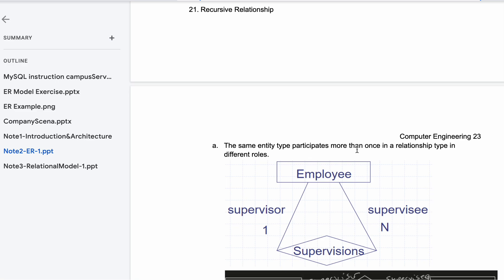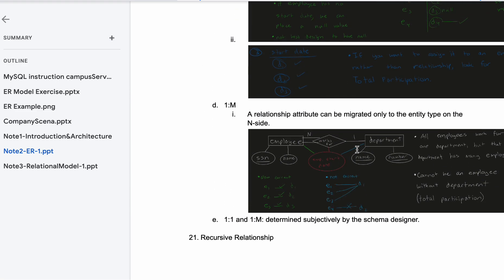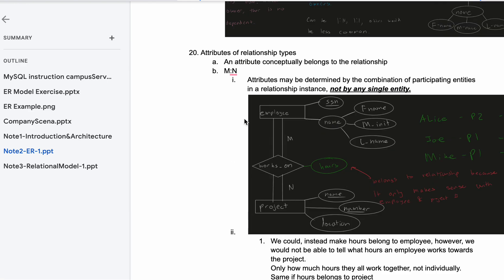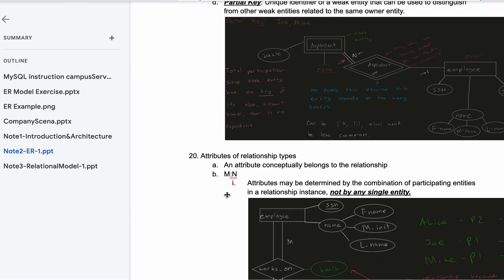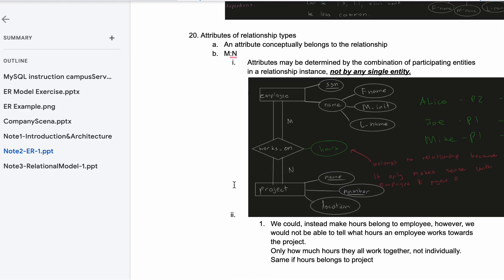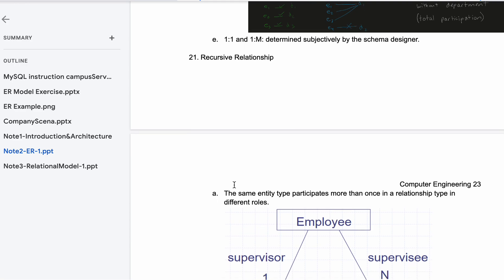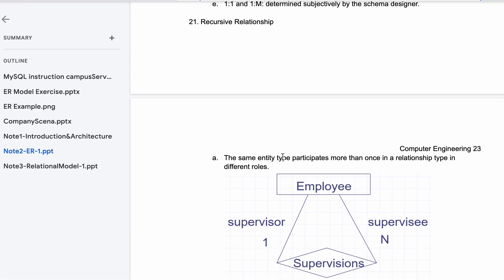We're covering recursive relationships. Previously we've looked at relationships like one-to-many, one-to-one, and many-to-many—these are attributes of relationship types. Now we are going to look at where we use recursive relationships. It's when the same entity type participates more than once in a relationship type with different roles. Remember, a role is kind of like the part that connects the entity to the relationship.